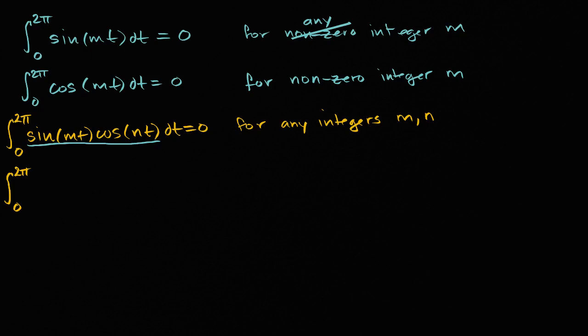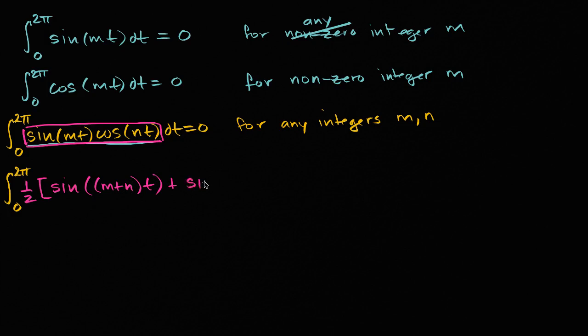This can be rewritten as one-half times sine of (m+n)t plus sine of (m-n)t, dt.